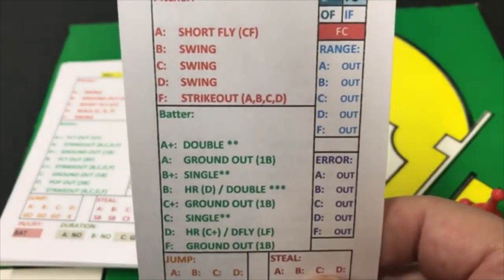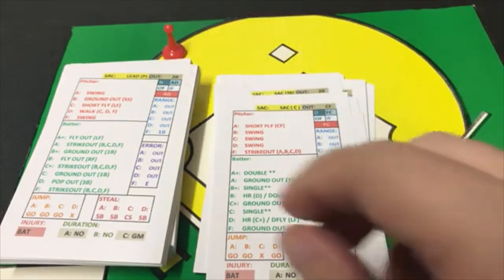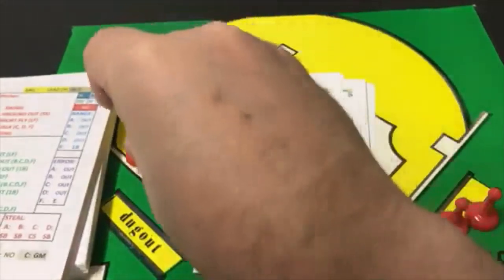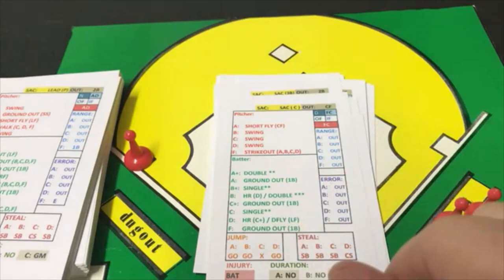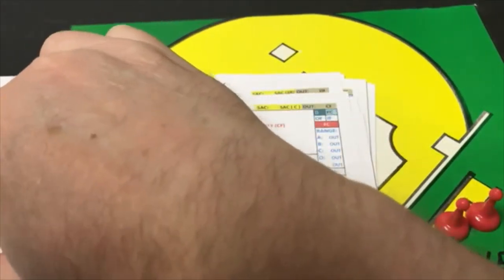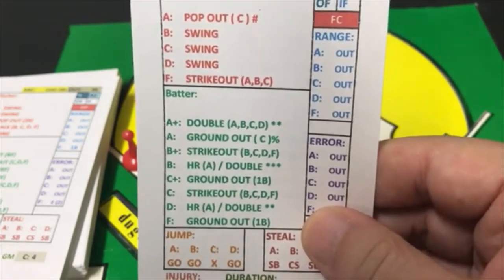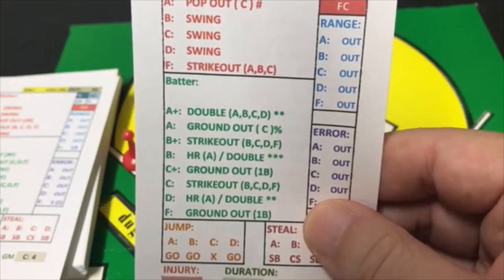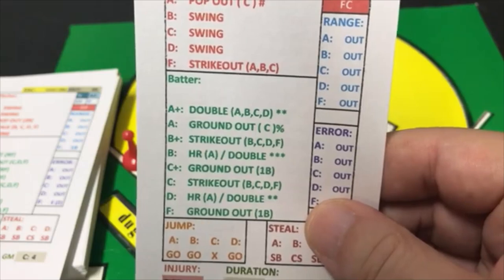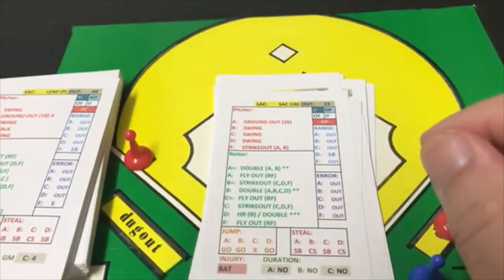Felsch is a C-plus batter against a C pitcher — swing, ground out to first base. That moves the runner to third. Buck Weaver is a B-plus batter. C pitcher swing, B-plus gets a strikeout if the batter is B through F at striking out — but he isn't. We refer to the out section: double play, but really just an out. The White Sox tie the game at one. We go to the top of the second.